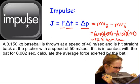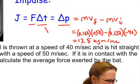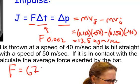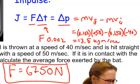And since I know my time, my time is .002 seconds, I can find the average force that was done on this baseball, and when I divide that, I end up finding an average force of 6,750, and of course force is in newtons. And that is how you do impulse problems.